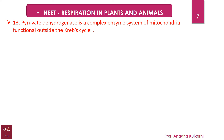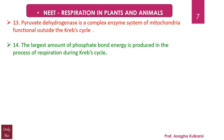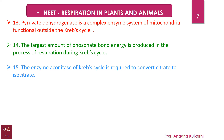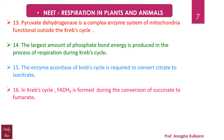Point number 13: Pyruvate dehydrogenase is a complex enzyme system of mitochondria that functions outside the Krebs cycle. Point number 14: The largest amount of phosphate bond energy is produced during the Krebs cycle in respiration. Point number 15: The enzyme aconitase of the Krebs cycle is required to convert citrate to isocitrate. Point number 16: In the Krebs cycle, FADH2 is formed during the conversion of succinate to fumarate.